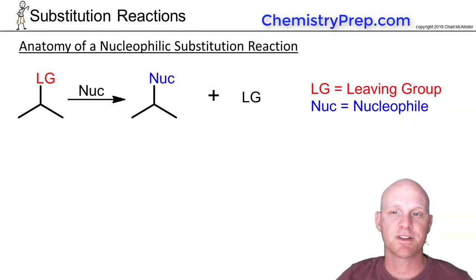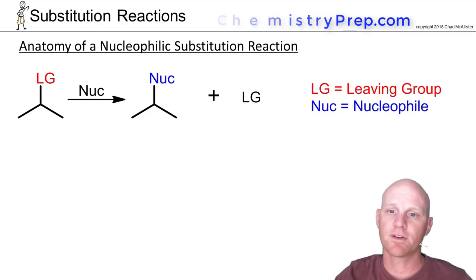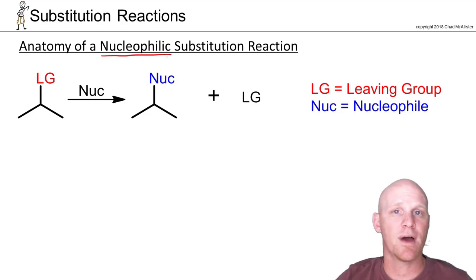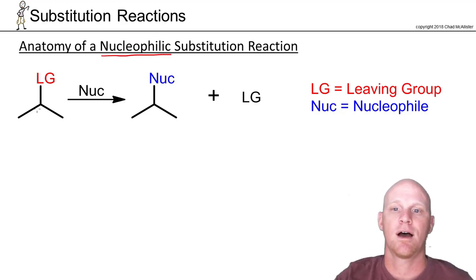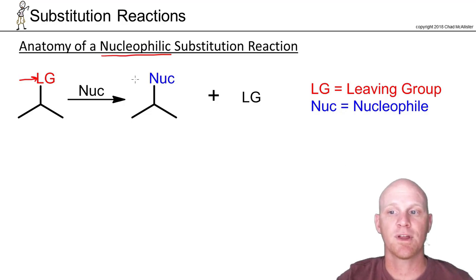The focus of this chapter is nucleophilic substitution reactions, where we're replacing one group with another. There will be two major types: SN2 and SN1. The group being replaced is called the leaving group, and the group replacing it is called the nucleophile.